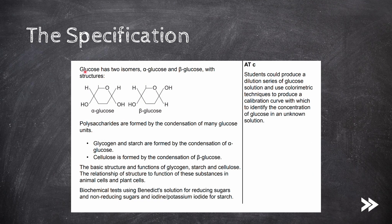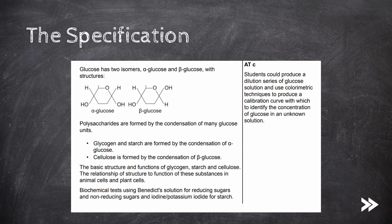We should also know the two isomers of glucose — alpha and beta glucose — and we should know their structure. We should know about polysaccharides, in particular glycogen, starch and cellulose, and their basic structure and function, and the relationship of their structures to their individual functions in animal and plant cells. Finally, we should know how to test for both reducing and non-reducing sugars using Benedict's solution, and how to test for starch using iodine solution.